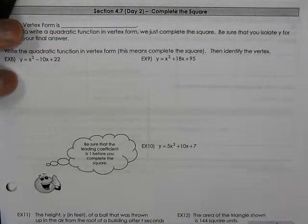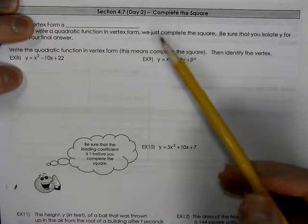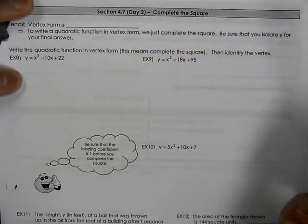This is Algebra 2 with trig 4.7. This is the second day of working with 4.7. This is completing the square.